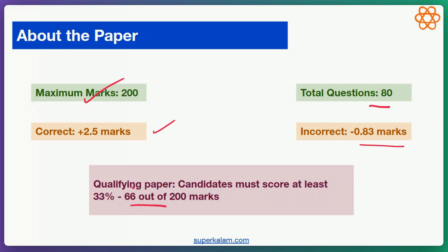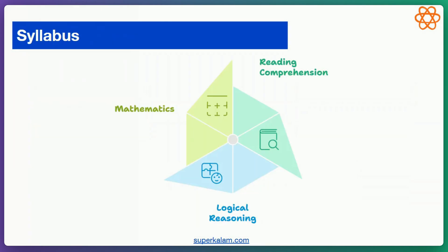The qualifying marks are 66 out of 200 — just 33%. With this in mind, let's look at the syllabus. There are three major buckets from which questions are asked: one is reading comprehension, second is logical reasoning, and third is mathematics.